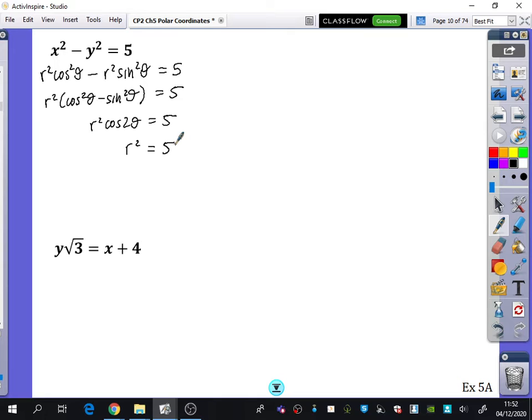In other words, r² is equal to 5 over cos 2θ, or what's preferable? Sec. 5 sec 2θ. Do you remember I said on that previous page you want it to be r equals or r² equals? So we're happy to leave this with r² equals for this.